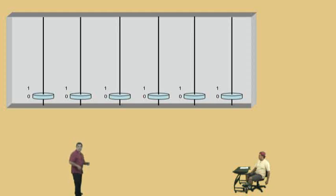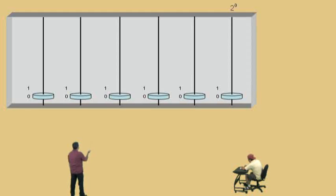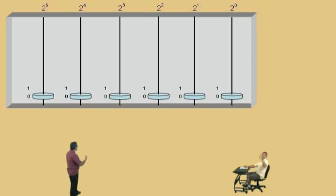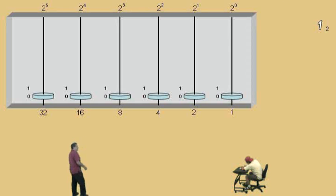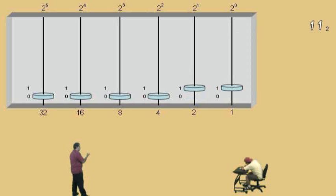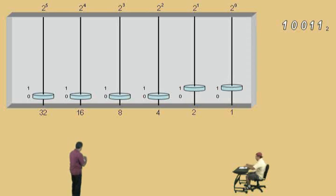Now we're going to do the base two numbers. A base two number means you only have two digits — a zero and a one. Remember, we have two to the zero for that first place value, two to the first, two squared, two cubed, two to the fourth, and two to the fifth. Two to the zero is one, two to the first power is two, two squared is four, two cubed is eight, two to the fourth power is 16, and two to the fifth power is 32. Now let's enter our base two number, our binary number. We'll put a one in our ones place value, a one in our two to the first power place value, a zero in our two squared place value which is four, a zero in our two cubed, and a one in our two to the fourth place value column, which is really a 16.